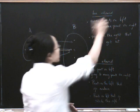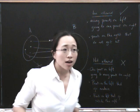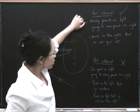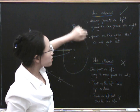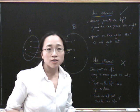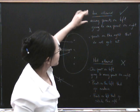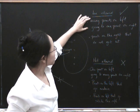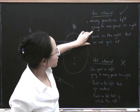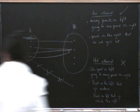So these are things we are allowed and these are things we aren't allowed. We might ask: do we have many points on the left going to the same point on the right, and do we have any points on the right that do not get hit? These are two important properties. When the first doesn't happen we say it's injective, and when the second doesn't happen we say it's surjective.